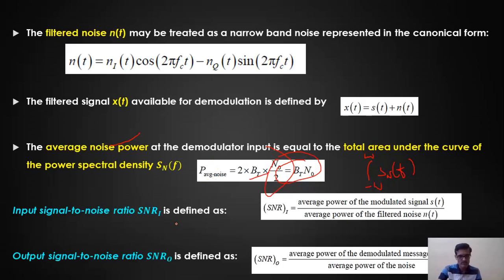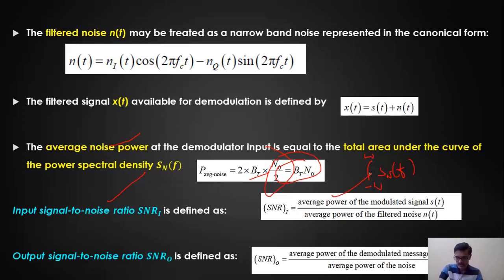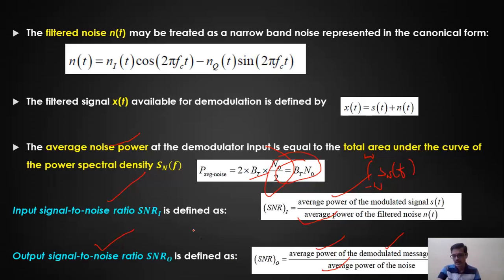Now let us define signal-to-noise ratio at the input of the receiver. The input SNR is the average power of the modulated signal divided by the average power of the filtered noise at the demodulator input. The output SNR is measured at the output of the demodulator: it is the average power of the demodulated message signal divided by the average power of the noise at the receiver output.